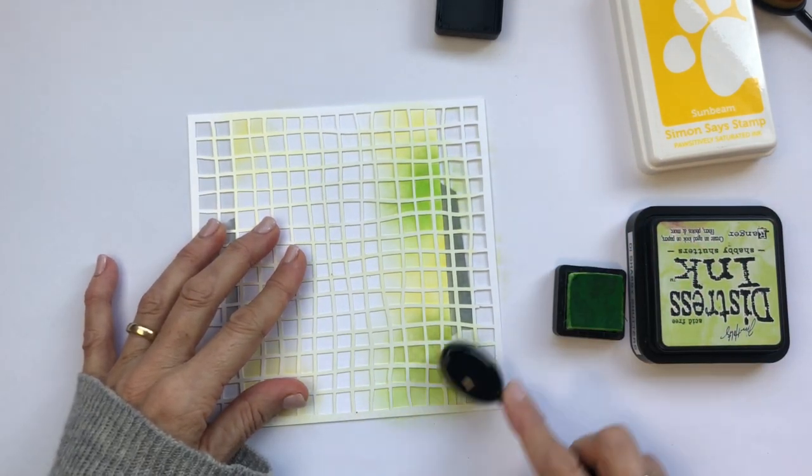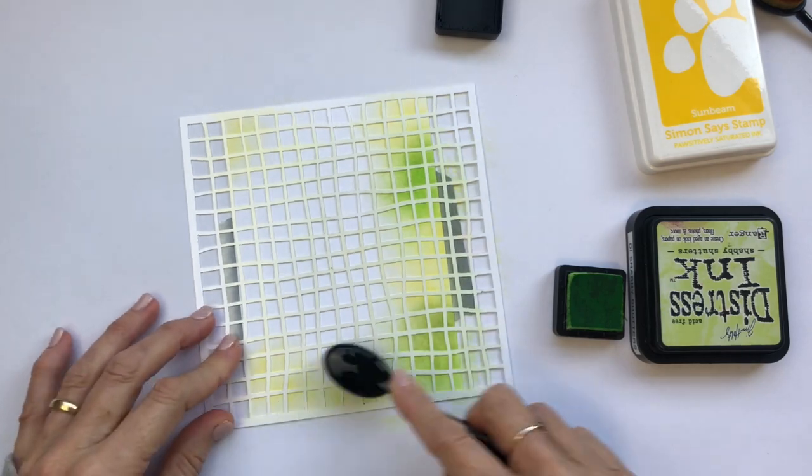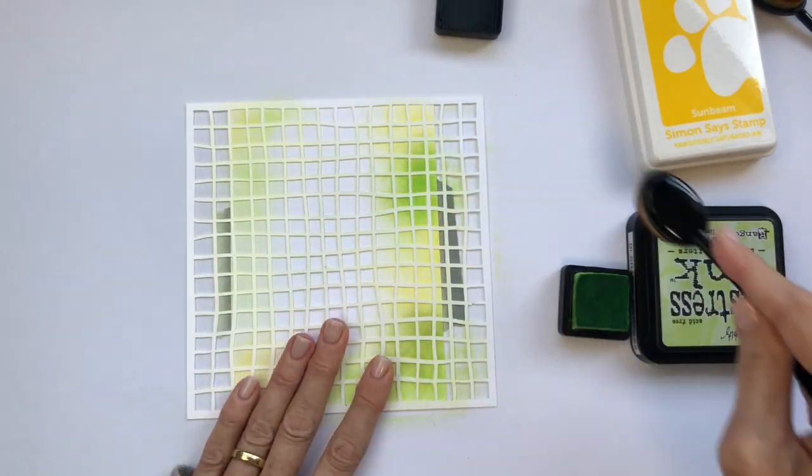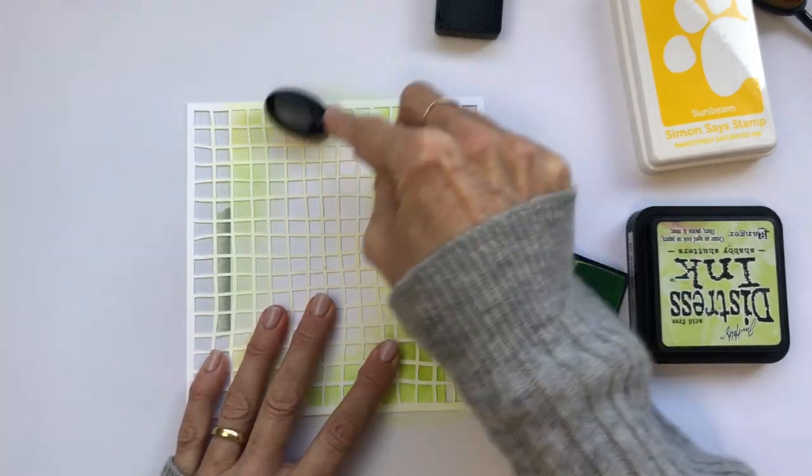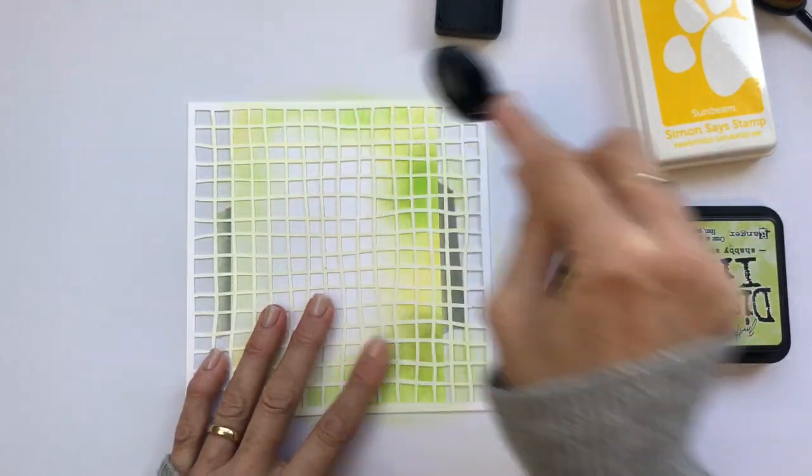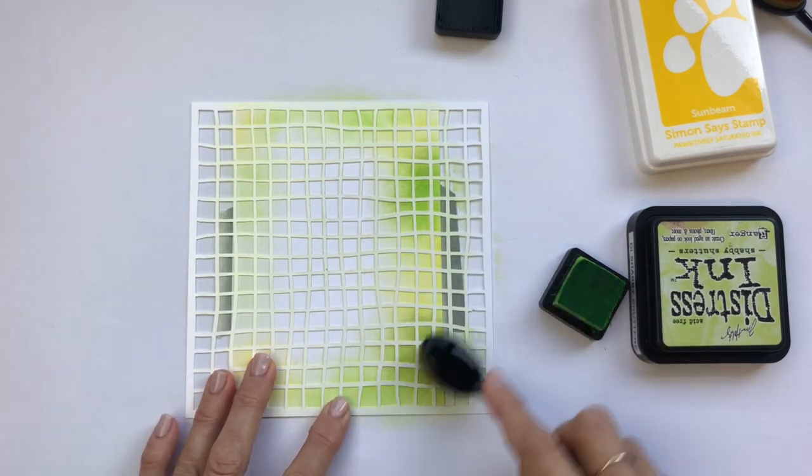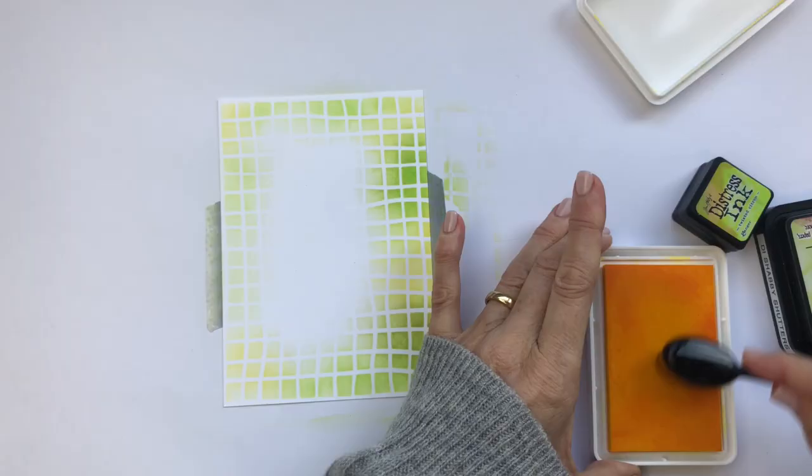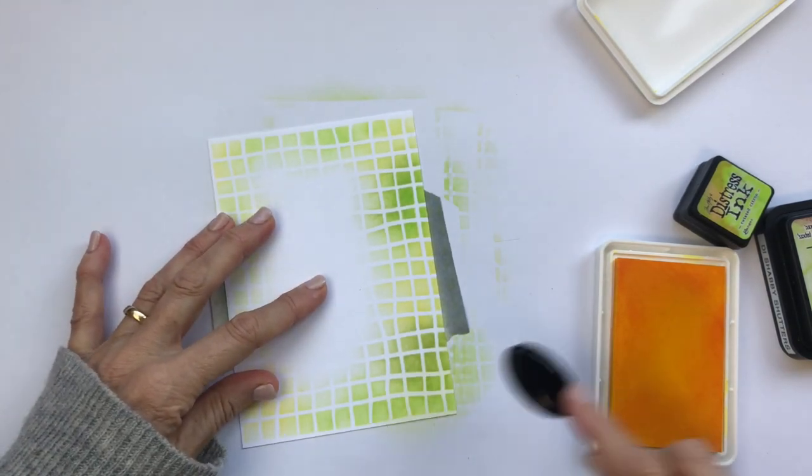This bird of paradise stamp that I'm going to use is large. It's going to take up pretty much the whole height of this card and about half of the width, and I'm going to place it slightly left of center. Once I've finished blending over the stencil I'm going back in with some yellow just to break up the high contrast white that was left behind.